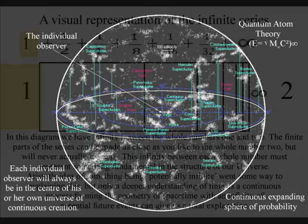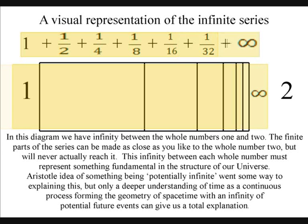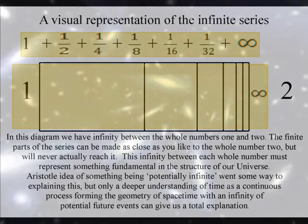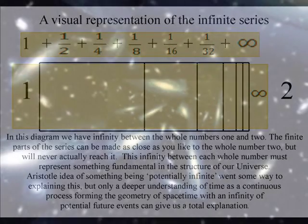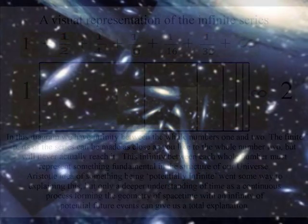In this diagram we have infinity between the whole numbers one and two. The finite part of this series can be made as close as you like to the whole number two but will never actually reach it. This infinity between each whole number must represent something fundamental in the structure of our universe.